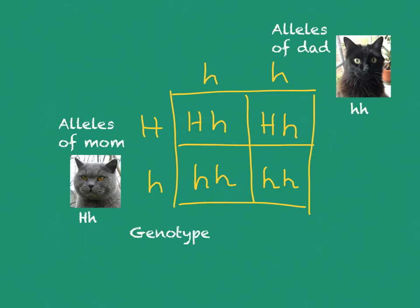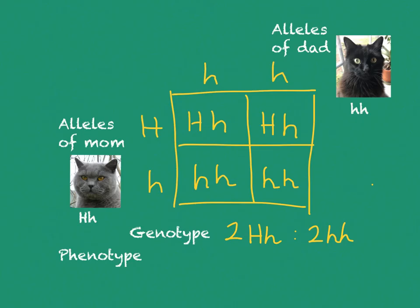But what about how they look? That's called the phenotype. Every time you have a dominant allele, that is going to be the trait that shows. So those two heterozygous kittens would have short hair — we'll have two short-haired kittens. And we'll have two long-haired kittens.